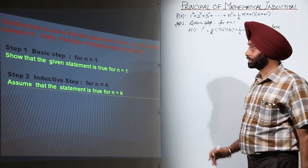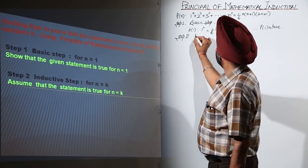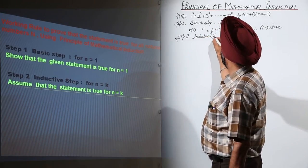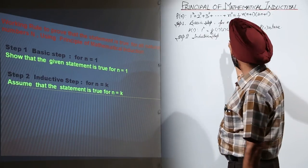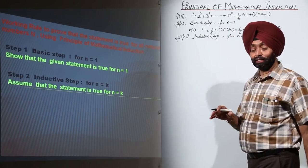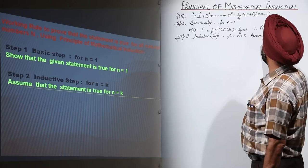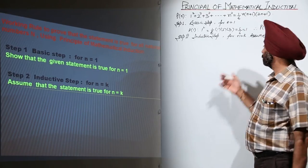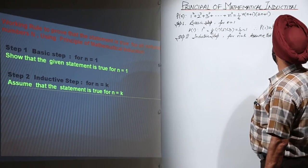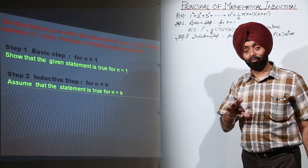Step 2 is called the inductive step — you can also write it as the induction step, it is the same thing. This is for n equal to k, and after writing this we are assuming it. Assume that when for n=1 the statement is true, then we assume P(k) is true.